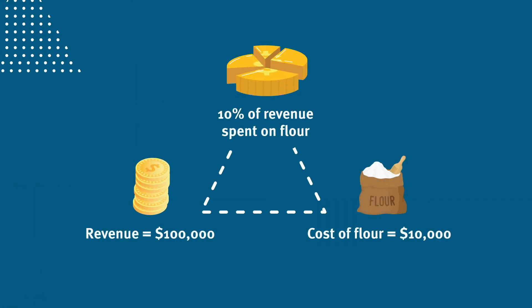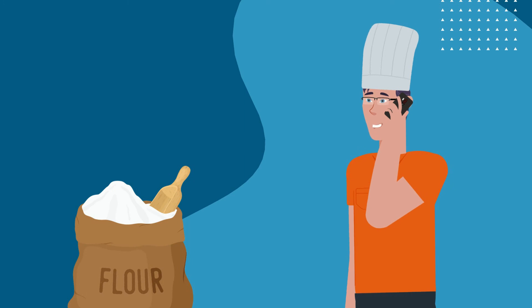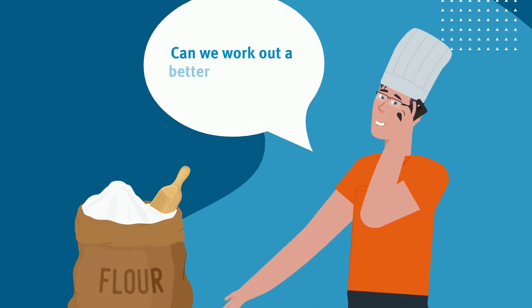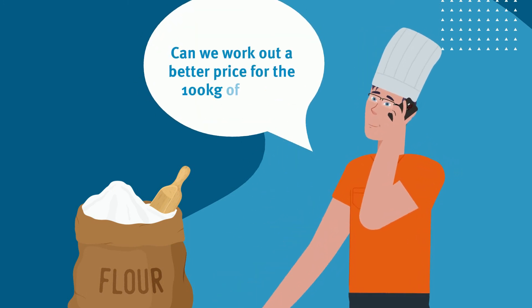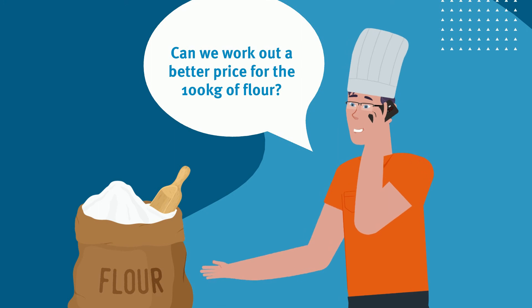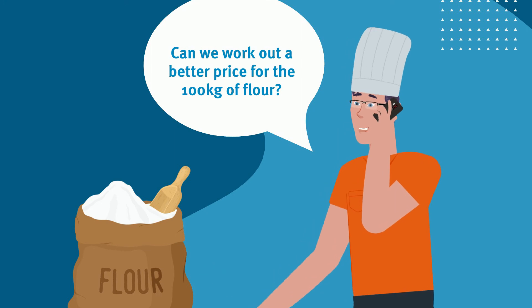Brett thinks he might be paying too much for some of his ingredients. He contacts his supplier and negotiates a cheaper price for the flour he buys.